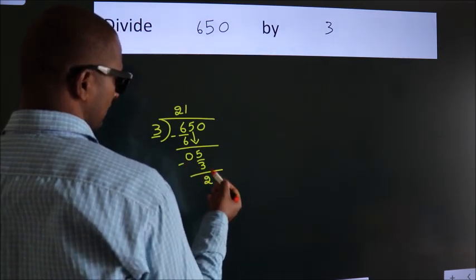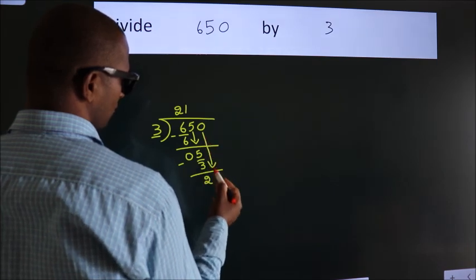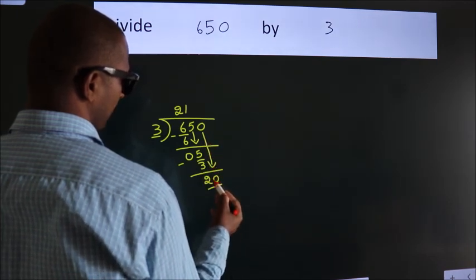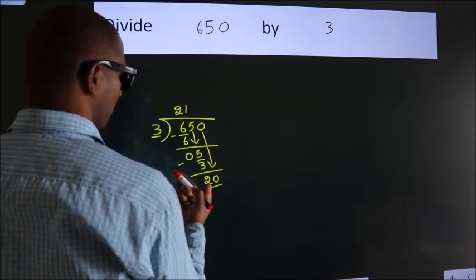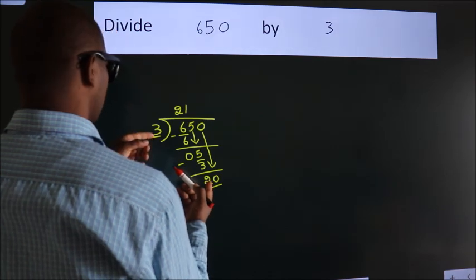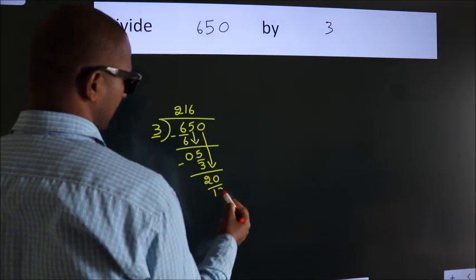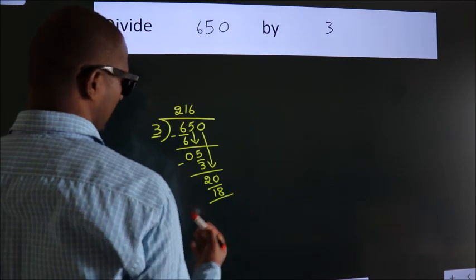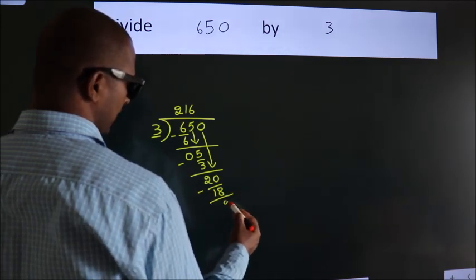After this, bring down the beside number. So, 0 down. 20. A number close to 20. In 3 table is 3 6 18. Now, we subtract. We get 2.